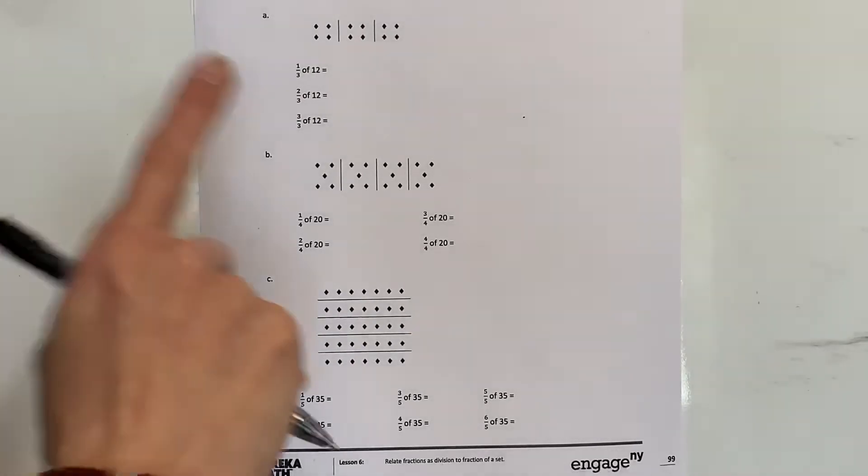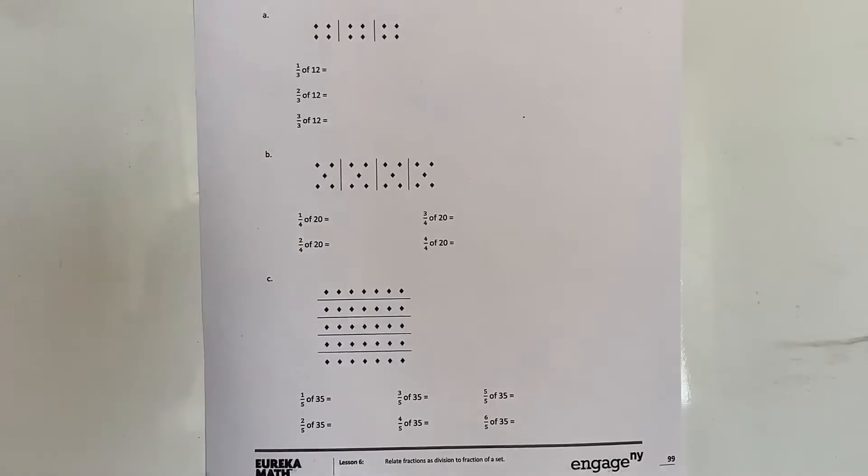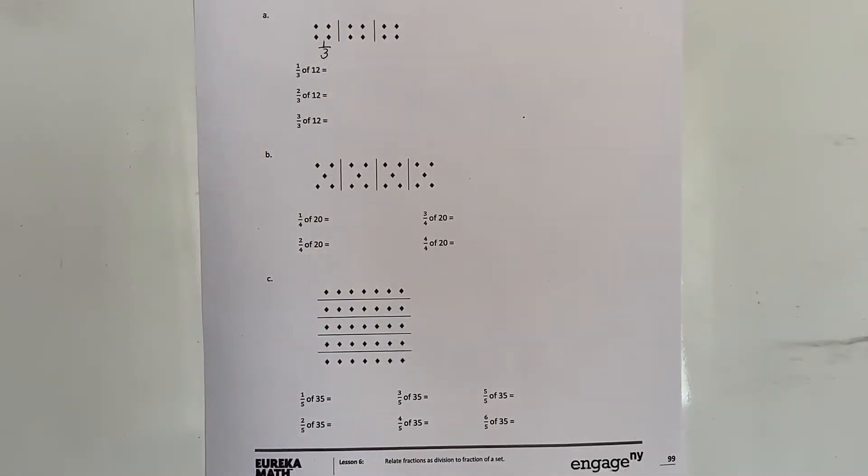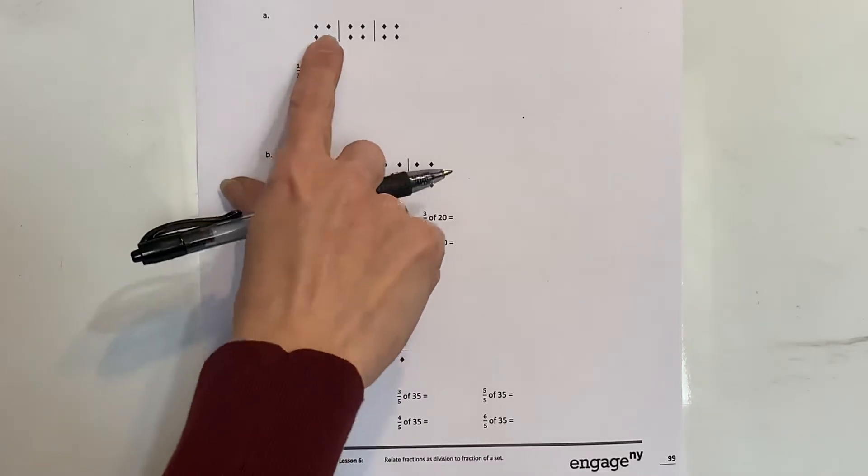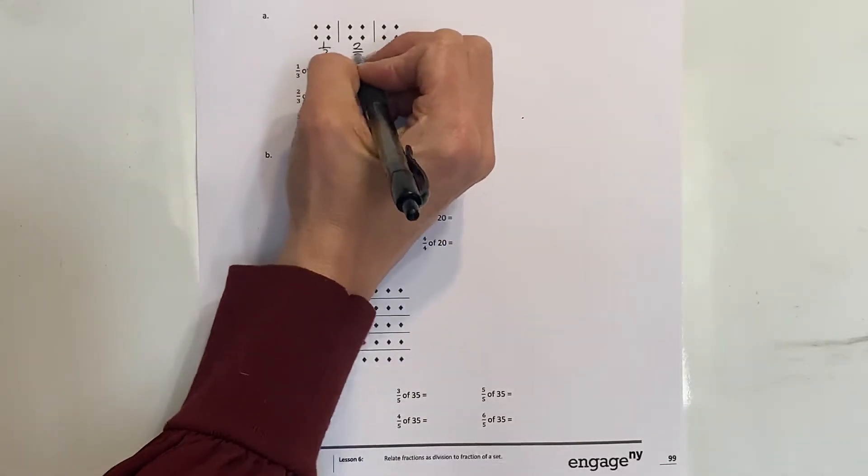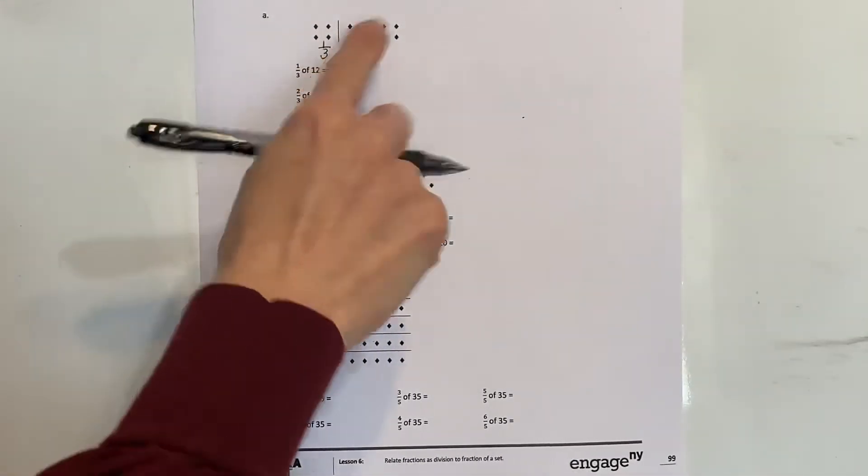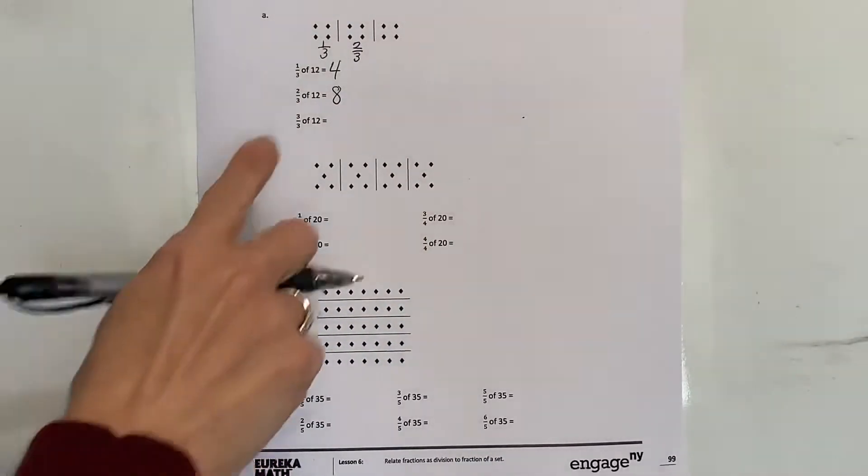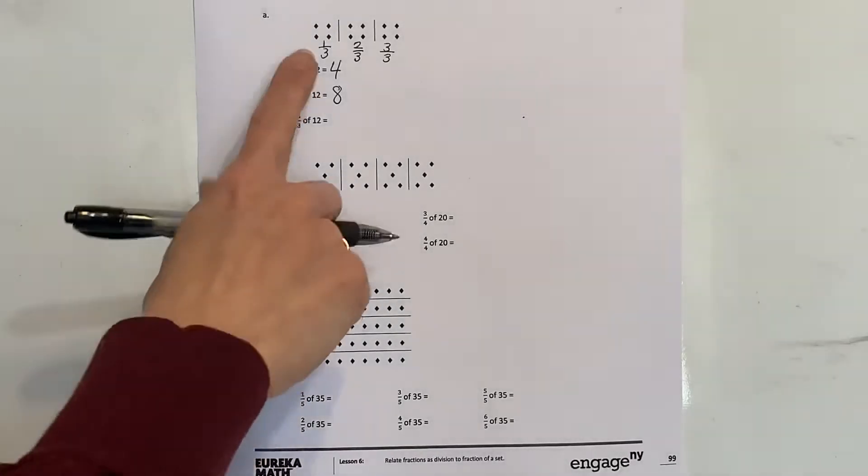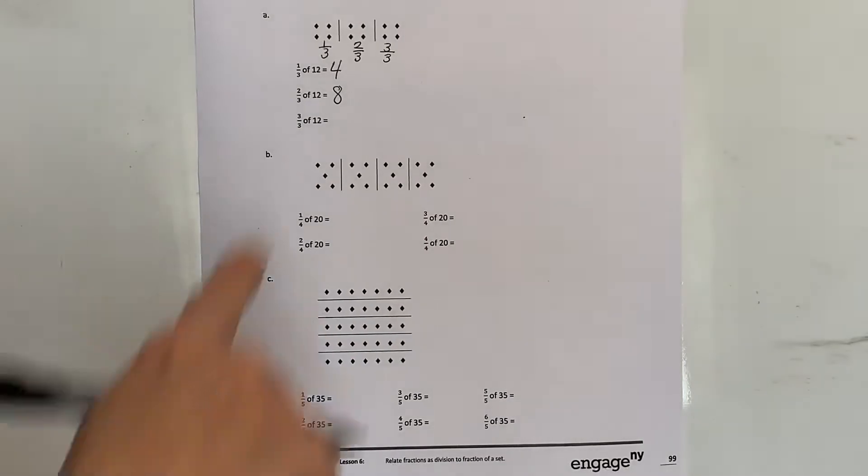We've got one, two, three equal groups. In each group I see there are four counters. So we've got one-third of twelve - I know that one of these groups is one-third of the whole twelve. One-third times twelve, I notice there are four counters. Two-thirds - that's two of those groups, so four, eight. Three-thirds is the same thing as one whole - if I have the whole thing, I have 12 counters altogether.